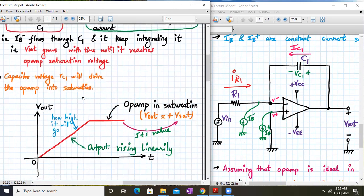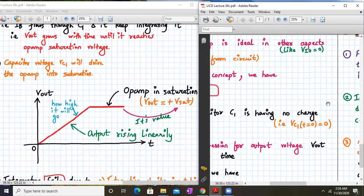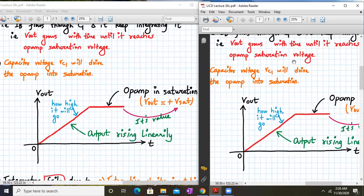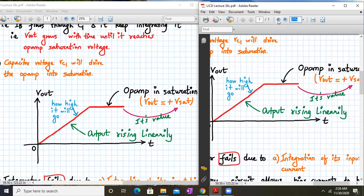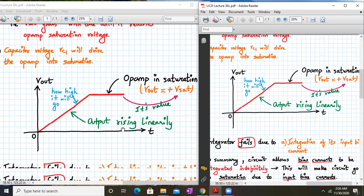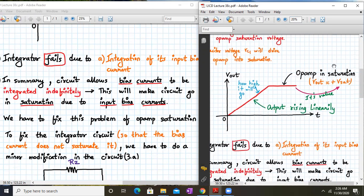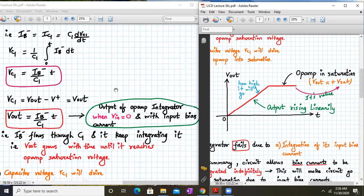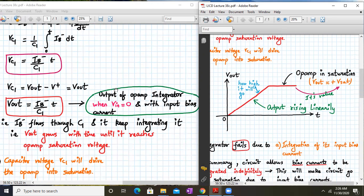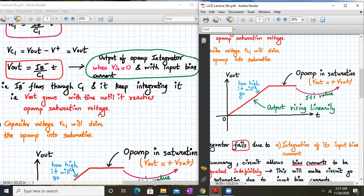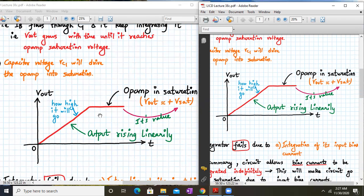I will open up the plot for your reference. What do we get over here? The output is increasing. vout is given by iv- upon c1 into t. As the time progresses, vout also progresses linearly. But as it is progressing linearly, there might be a point where the op-amp will just enter into saturation. So we should avoid this saturation region and we should operate the op-amp in the linear region. Op-amp as an integrator works in the linear region of operation. The capacitor voltage vc1 will drive the output into saturation.